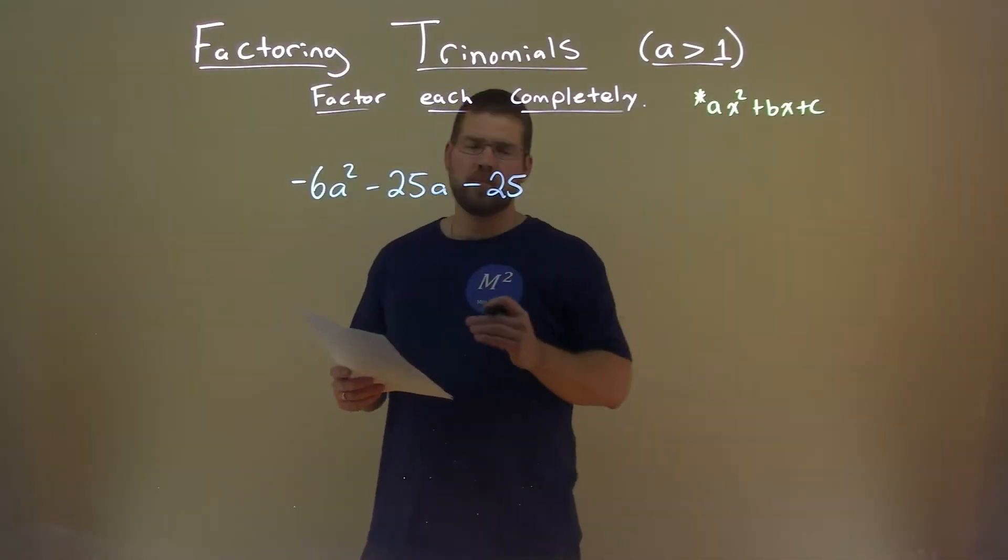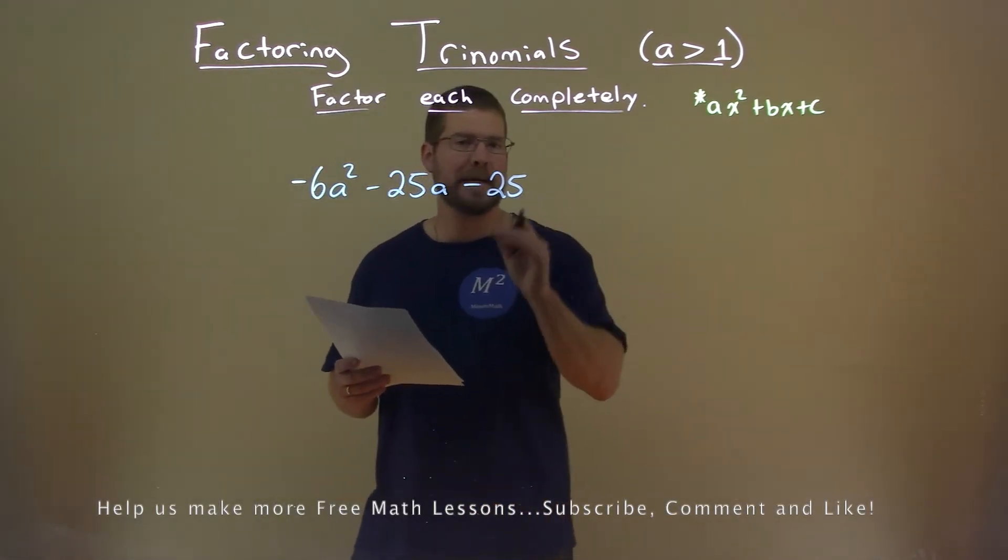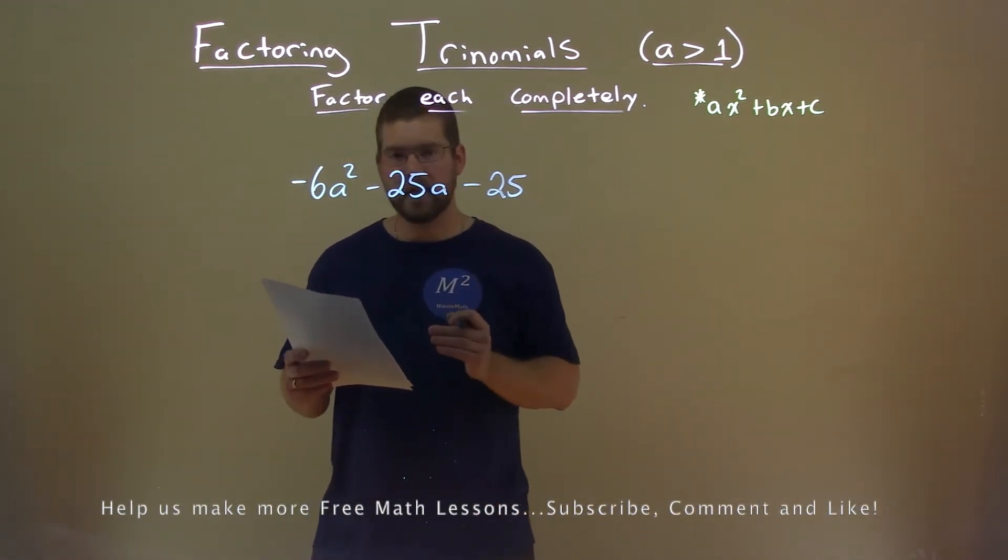We're given this problem right here: negative 6a squared minus 25a minus 25, and we need to factor this completely.